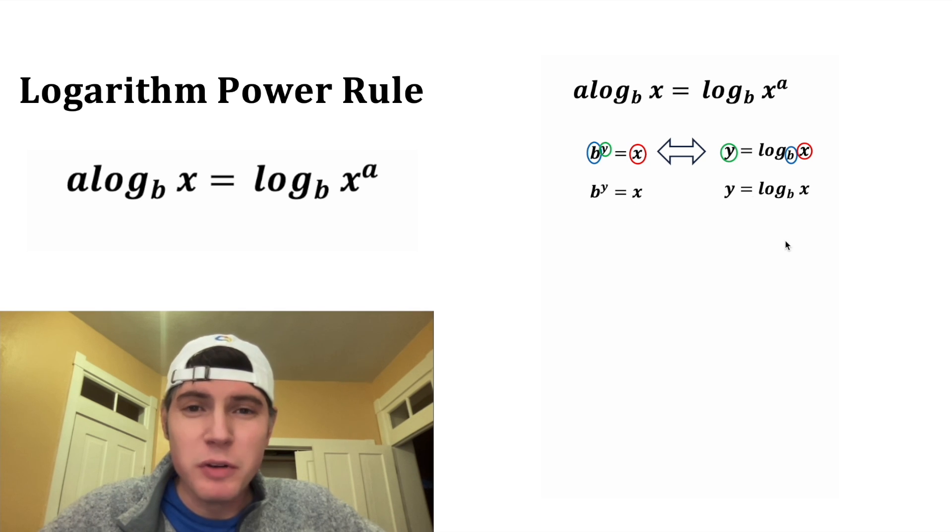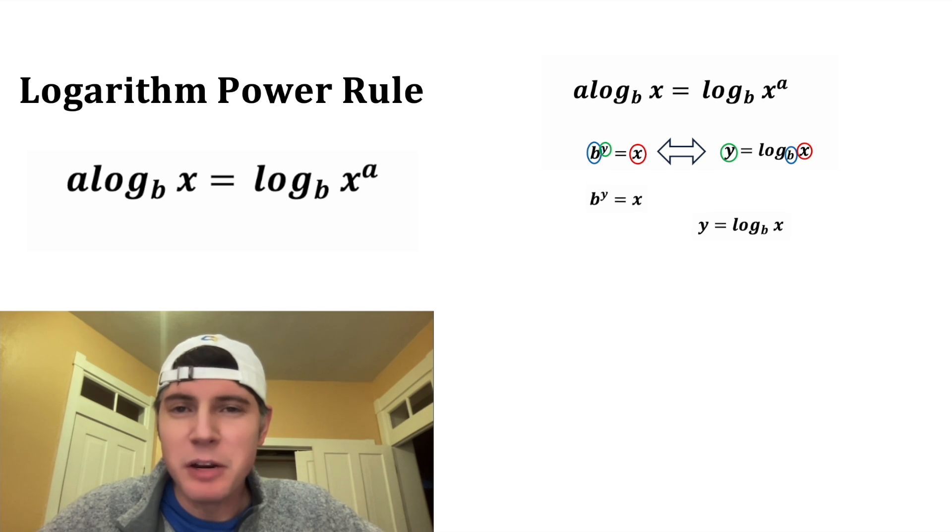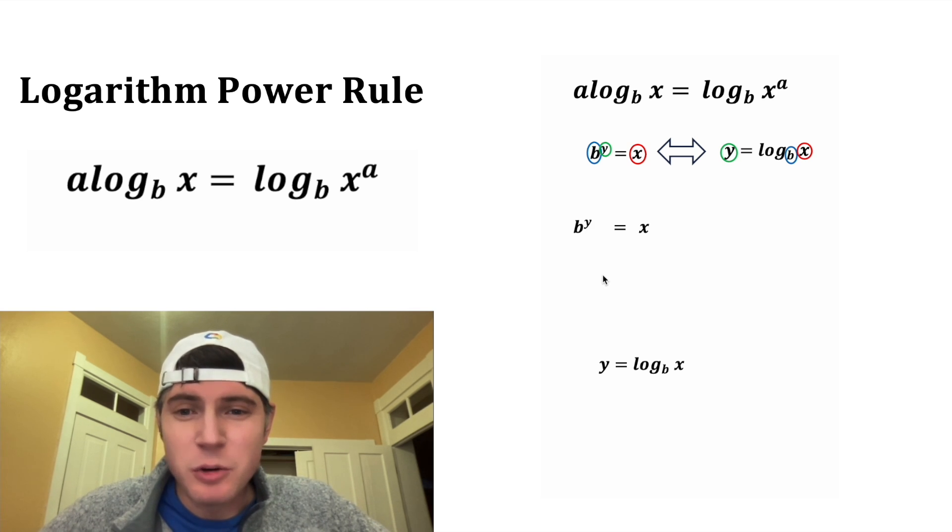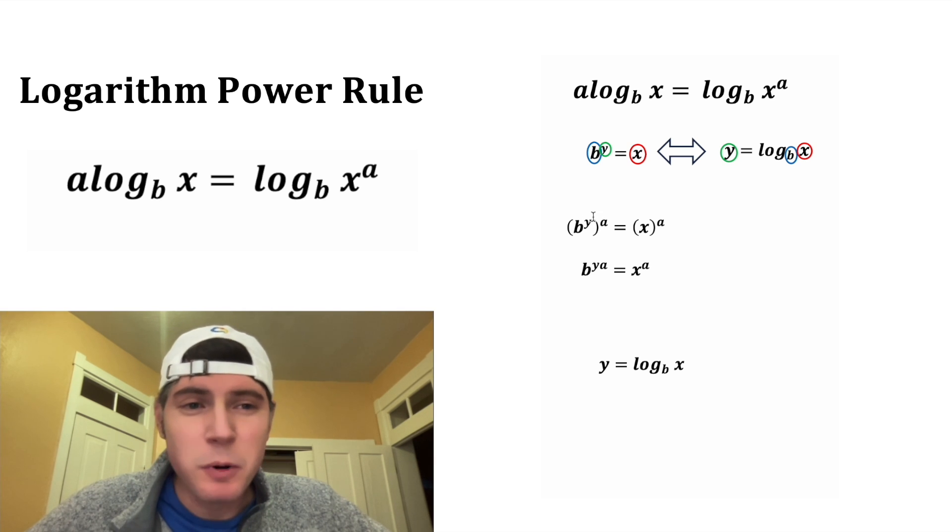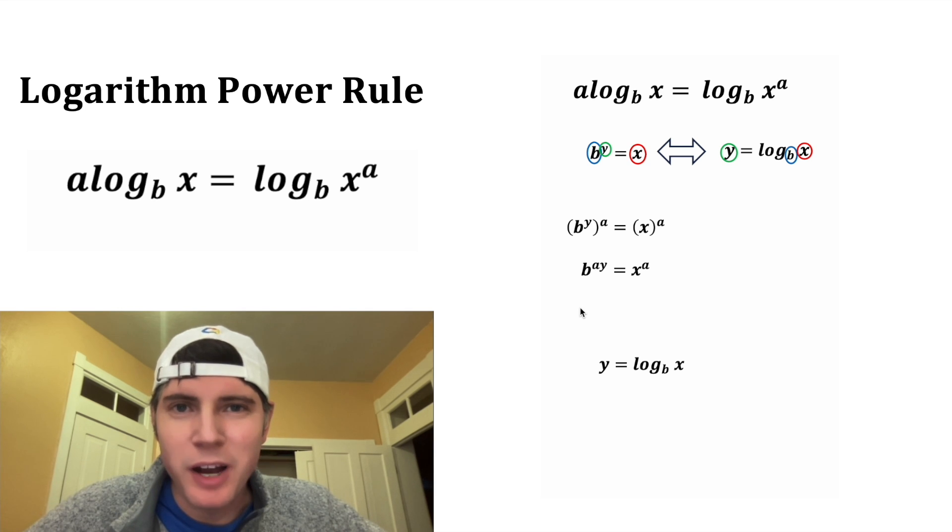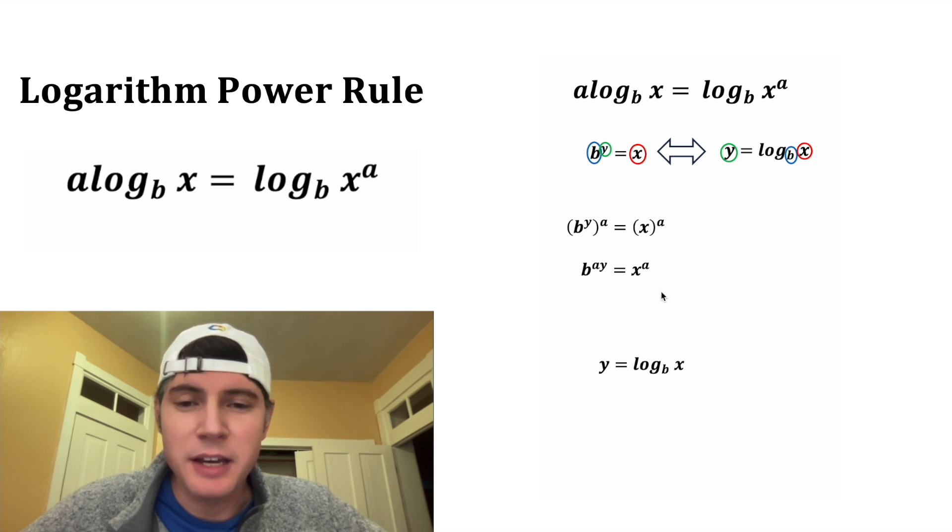Let's copy down both of these equivalent equations, and I want to play around with them a little bit. First, let's do this one, b to the y equals x. Let's exponentiate both sides of the equation to the power of a. On the left-hand side, these exponents will multiply, so we have b to the power of y times a. And we can change the order to get b to the a times y. And then on the right-hand side, this will be x to the a.